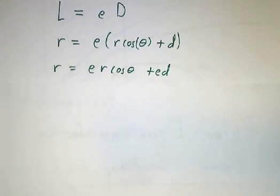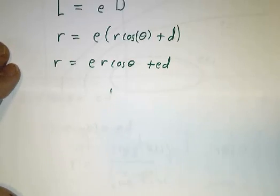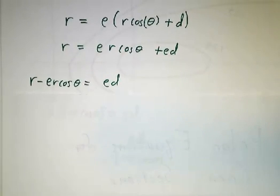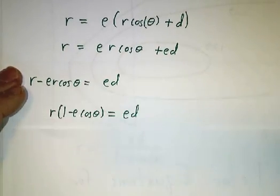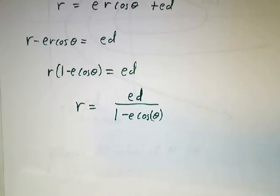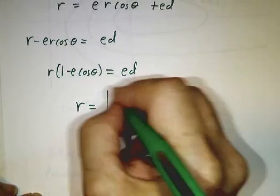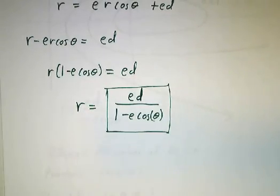And we just expand it out: r is e r cosine theta plus ed. We put the e r cosine theta on the other side, factor out an r, and divide by 1 minus e cosine theta. There we go. This is our equation for a conic section in polar coordinates.